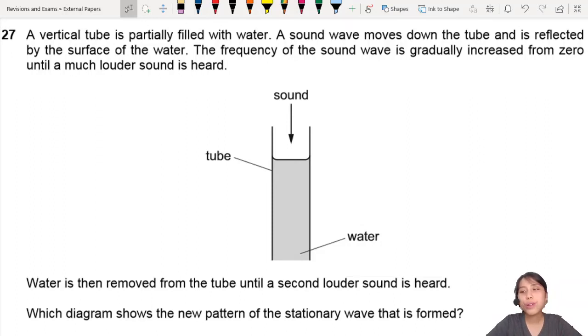A vertical tube is filled with water. A sound wave moves down the tube and is reflected by the surface of the water. That tells me that in this tube, the top is the open end and the water level is the closed end of the tube because it's a boundary where the wave will reflect back.